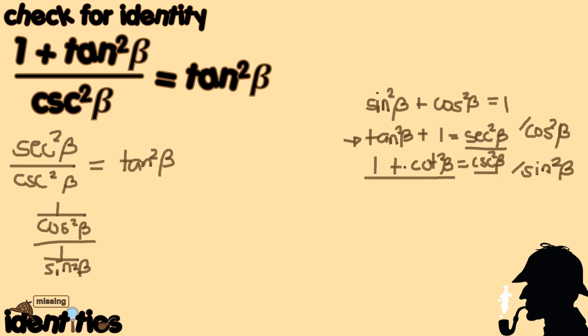Just like what happened to our numerator with a binomial expression, we had a monomial. So we stick with monomial terms here. This is equal to tangent squared beta as given, and that's what we are trying to verify.